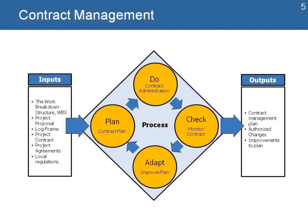Let's look at our process. We have our inputs: we look at our WBS, the project proposal, the log frame, the contract, any project agreements, and local regulations. We have our plan, we administer our contract, we check and make sure that we're complying with the contract, and then we adapt or make improvements. Key outputs of this process are a contract management plan and a process to authorize any changes and improvements to the plan.